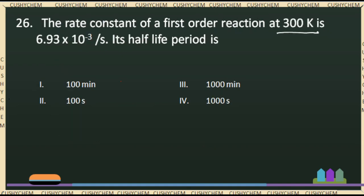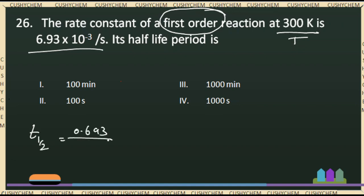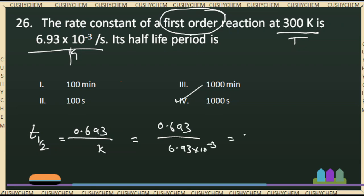The rate constant of a first-order reaction: the half-life of a first-order reaction equals 0.693 divided by k. With the given rate constant of 10 to the power minus 3, the half-life works out to 100 seconds. The right answer is 100 seconds.